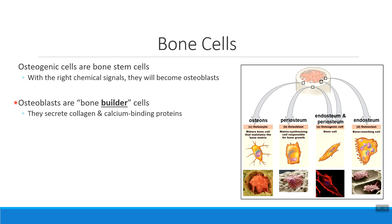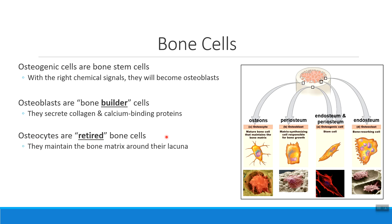When osteoblasts are really good at doing their job, they end up completely surrounded by collagen and calcium. At that point they're going to become an osteocyte. I like to think of osteocytes as retired bone cells. Because there's no more space around them, they're completely surrounded by calcium and collagen. Their only job is to make sure that the space around their lacuna — their little home — has stable, functional calcium and collagen. So much bone tissue is built that the osteoblast ends up surrounded and becomes an osteocyte.